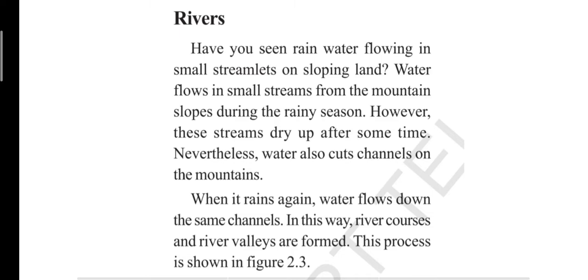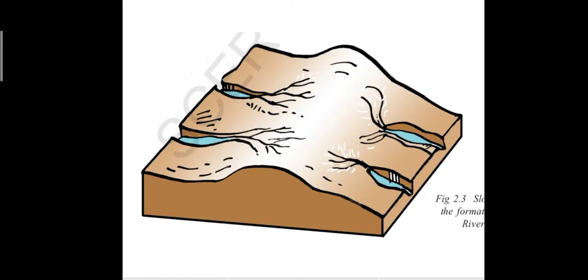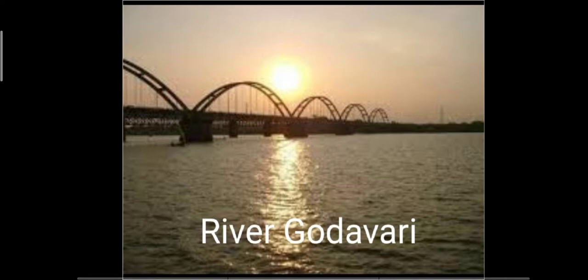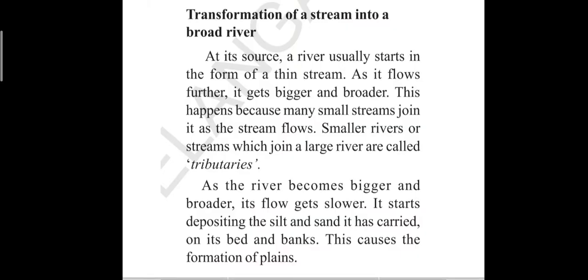This process is shown in figure 2.3 of your textbook. You can observe how small rainwater streams form, flow, and join the big flow of water called rivers to form a broad river. You can see the Ganga River, which is a perennial river, and the Godavari River, which is a peninsular river.